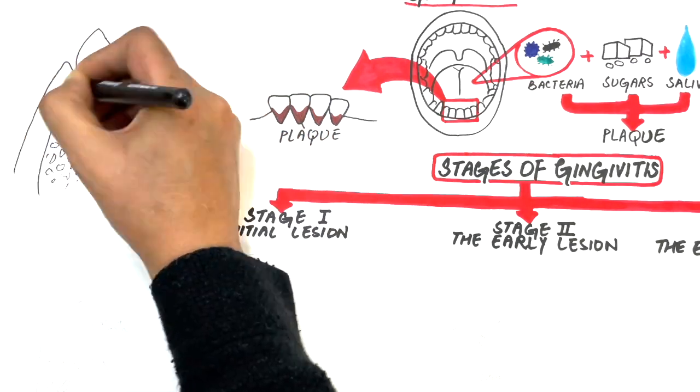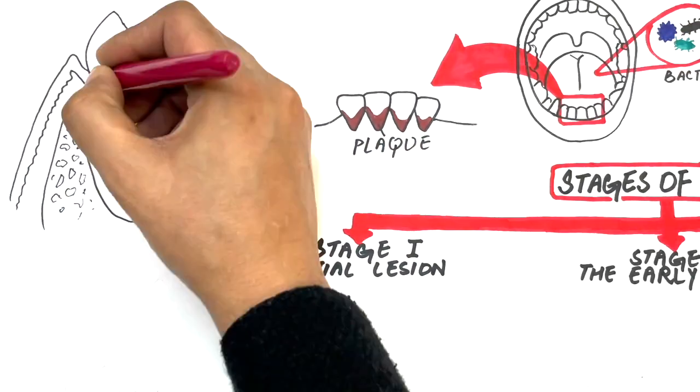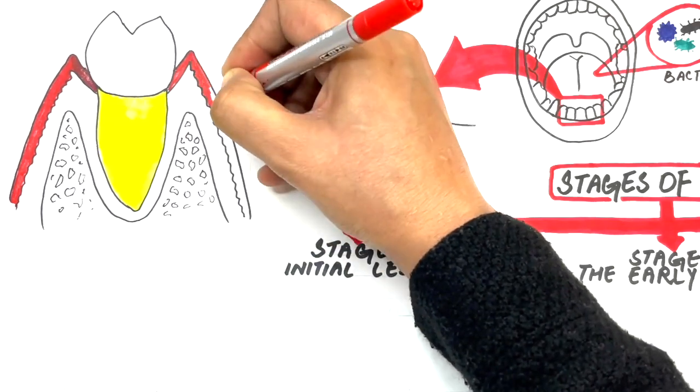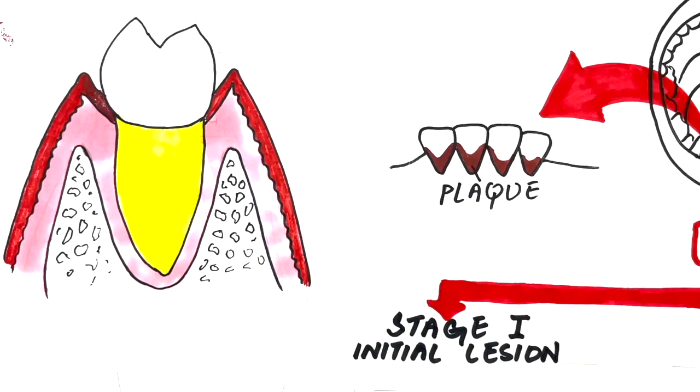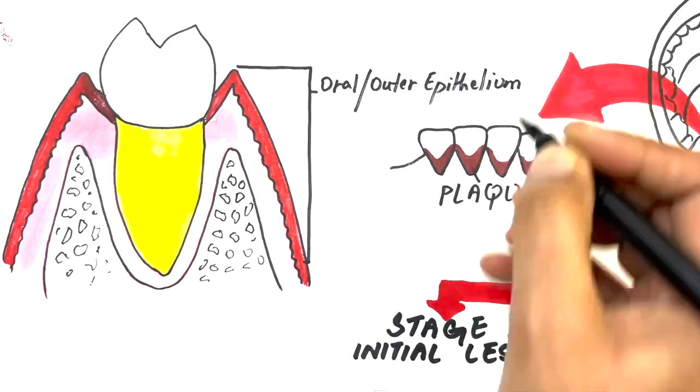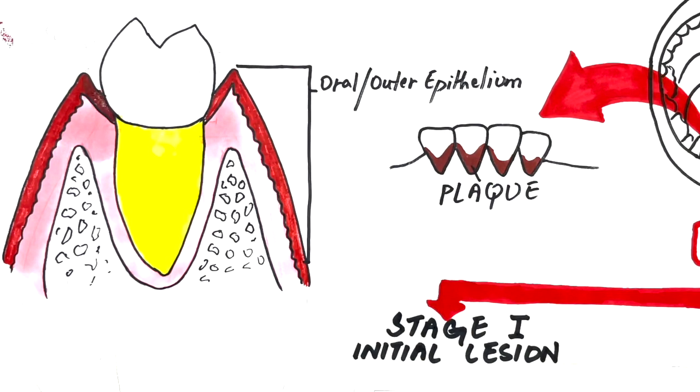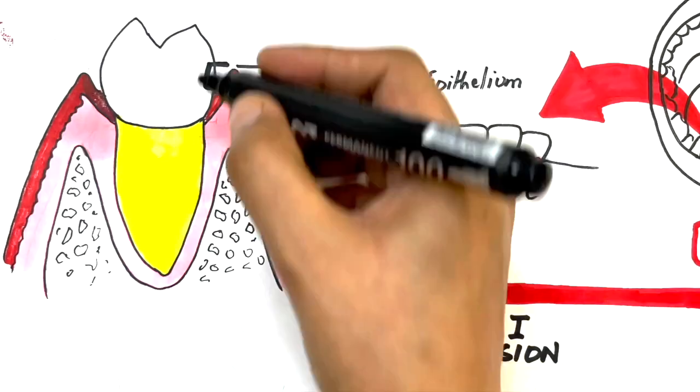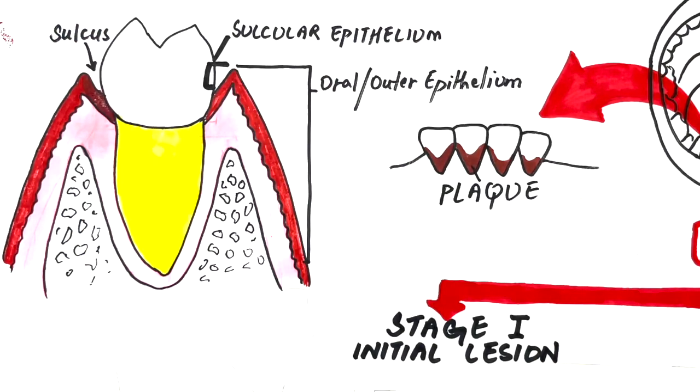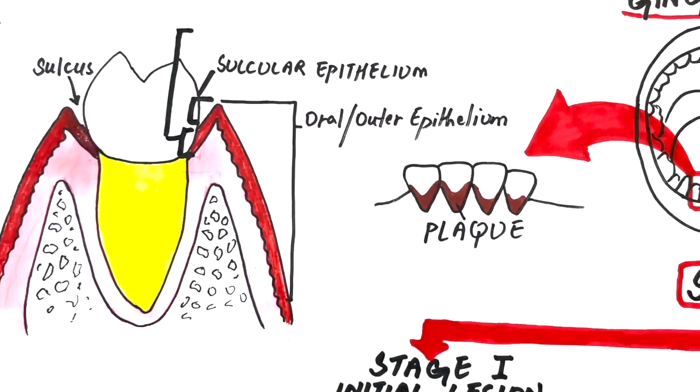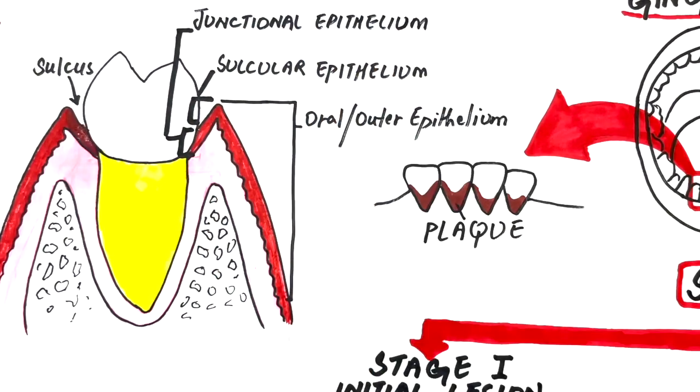Gingiva consists of a central core of connective tissue covered by stratified squamous epithelium. Three types of epithelium exist in the gingival tissue: the oral or outer epithelium which is keratinized and lines the free gingival margin, the sulcular epithelium which lines the sulcus, and the junctional epithelium which surrounds the tooth in a collar-like fashion and attaches to the enamel of the tooth at its inner end and to the connective tissue at its outer end.